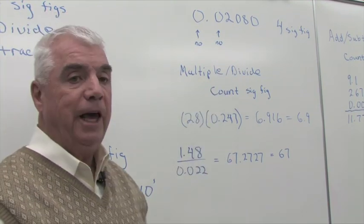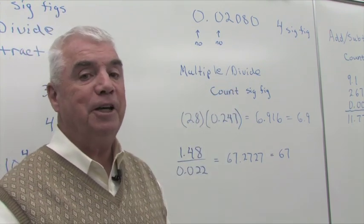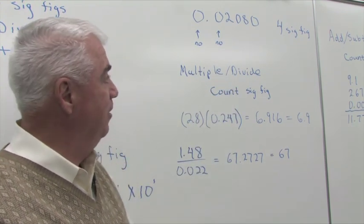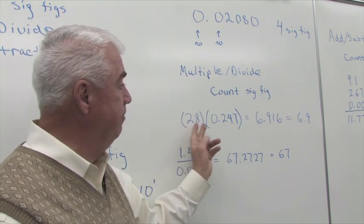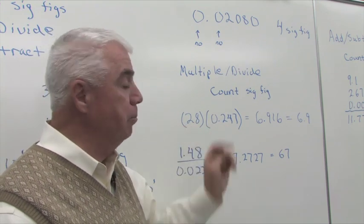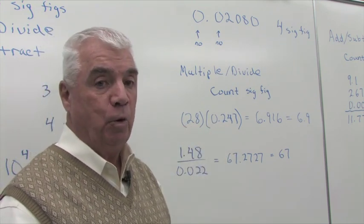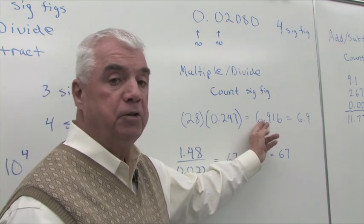Let's do some multiplication and division. The rule here is that you count significant figures. That is to say, when you're multiplying two numbers, count the significant figures in each part, and it's the smallest number of significant figures that wins. So when I multiply these two, I come out with this number.